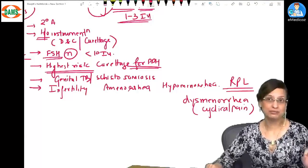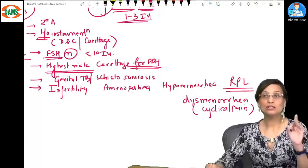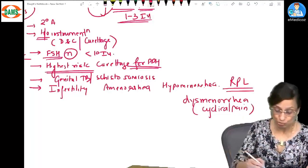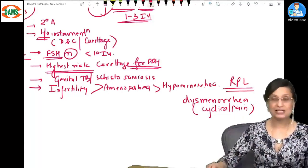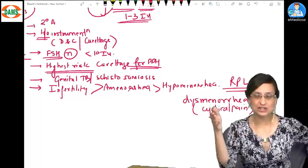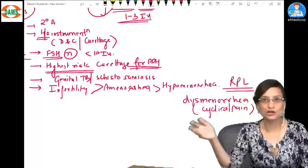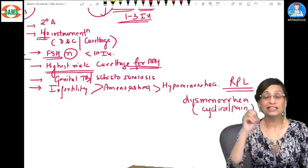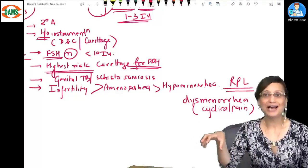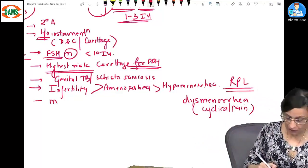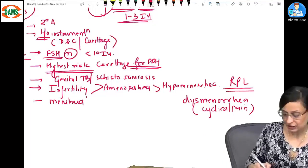Also, the second place I feel you students get confused is the order. So most common presentation is like this: infertility. If you compare individual presentations, the most common is infertility, then amenorrhea, then hypomenorrhea. But if it is a group, then it will be menstrual irregularities more common than infertility because menstrual irregularity is a group of complaints. Is that clear? I hope you are not confused on that.